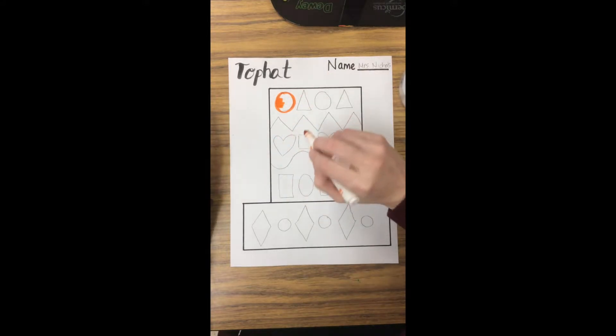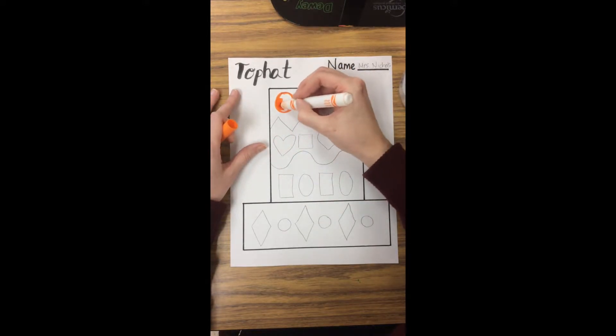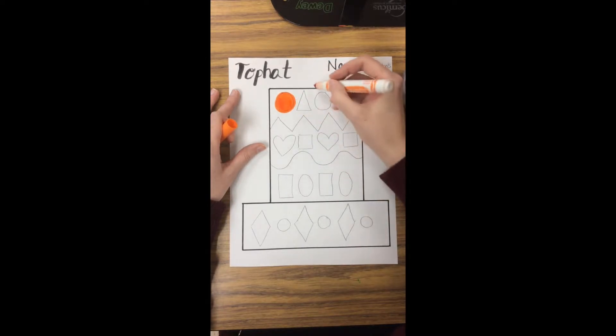And do I want to go scribbly or slow? Nice and slow. I don't want to leave any white in there. I want to fill it all the way in.